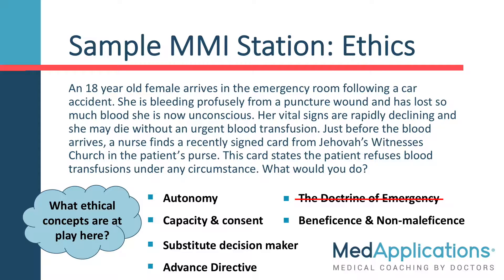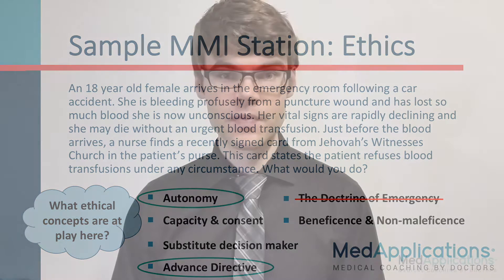Now that we have identified the main ethical concepts, which two do you think should take priority in this case? Autonomy and advanced directive should take priority here. Ignoring this patient's advanced directive would violate her autonomy and would actually constitute harm in an ethical sense. This is a real-life case, and the doctor that gave her blood was subsequently sued and found liable for damages for not following the advanced directive. In summary, the most ethical solution to this scenario would be to not give the blood transfusion, as this best upholds the patient's autonomy and values.